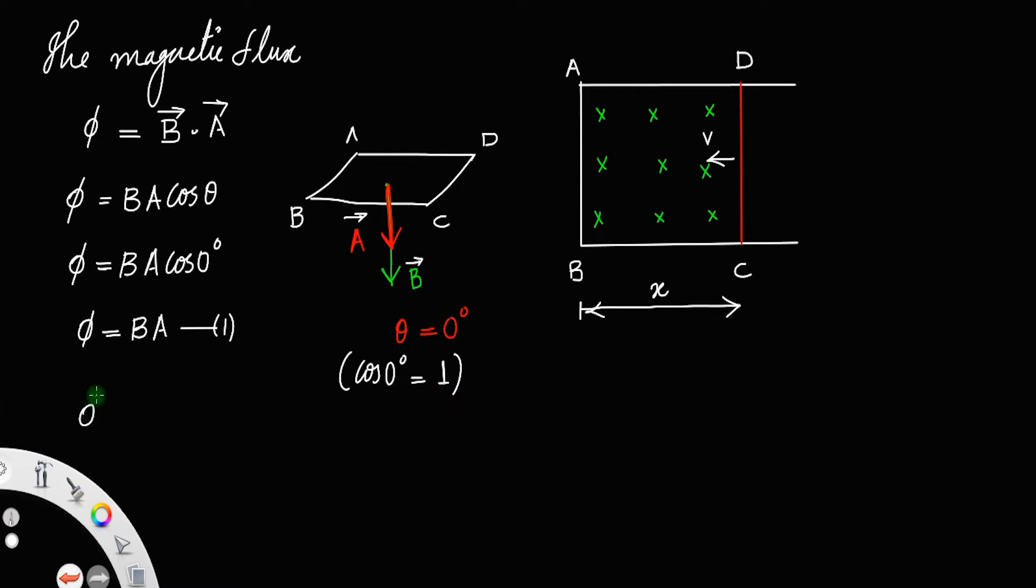Now we have flux phi equal to BA. When you look at the area ABCD, we have area of the rectangle equal to length BC into CD. Let us assume the length of the rod be L. So BC is equal to x and CD is equal to L. So area equal to xL. So phi is equal to BxL. Let us call that as equation number 2.